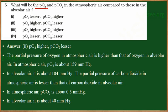What will be the partial pressure of oxygen and carbon dioxide in the atmospheric air compared to those in the alveolar air? Option: the partial pressure of oxygen is lesser and carbon dioxide is higher. Option: the partial pressure of oxygen is higher whereas the partial pressure of carbon dioxide is lesser. Option: the partial pressure of oxygen and carbon dioxide is higher. Last option: the partial pressure of oxygen and carbon dioxide is lesser.